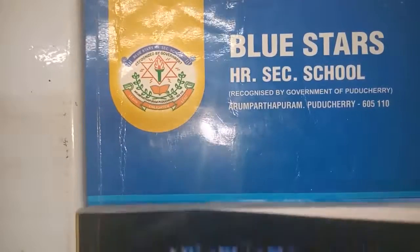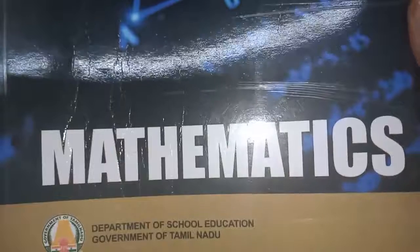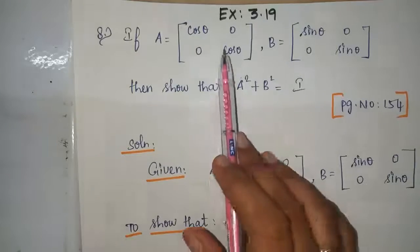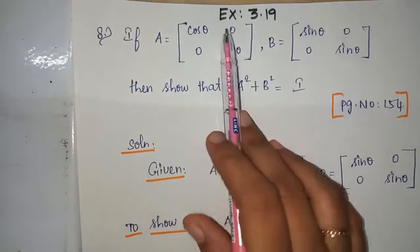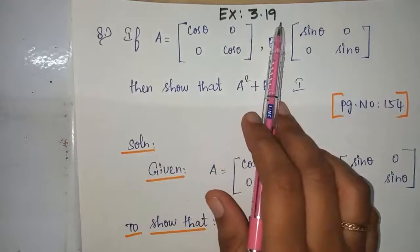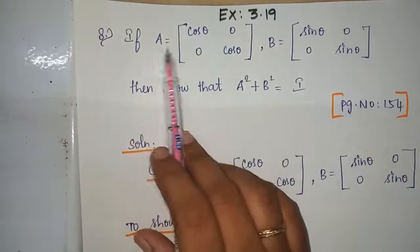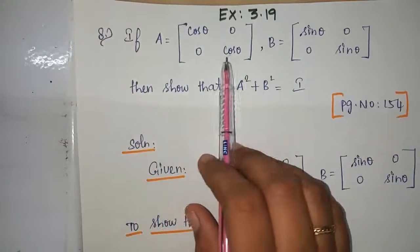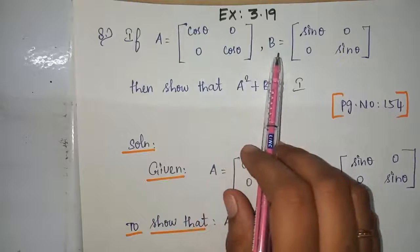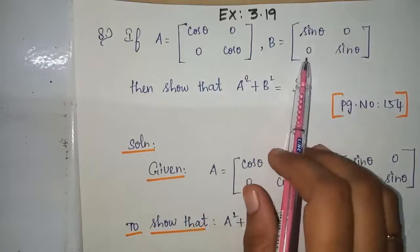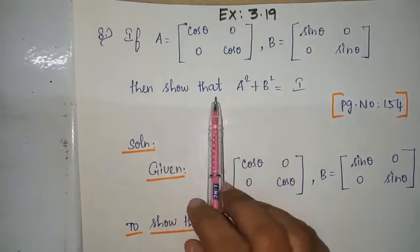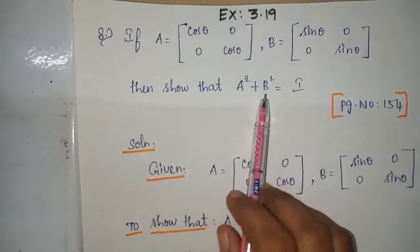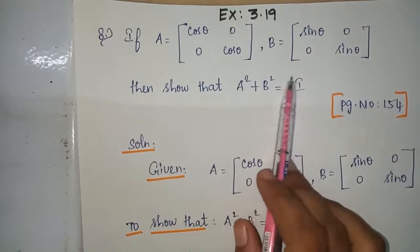Blue Star High Secondary School video classes for 10th standard mathematics. Happy morning students, today we are going to see exercise 3.19 continuation, 8th problem: if A equals cos theta 0 0 cos theta, comma B equals sin theta 0 0 sin theta, then show that A squared plus B squared equals I, the identity matrix, which is in page number 154.